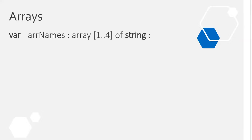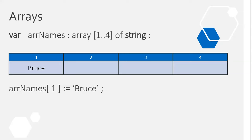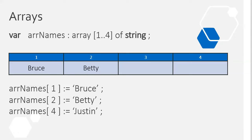Let's take an array of strings from 1 to 4. To put a value into the array, you take the name of the array followed by square brackets with the position you want to change, then use the assignment symbol. For example, 'arrayNames[1] := "Bruce"' puts Bruce into position 1. Similarly, 'arrayNames[2] := "Betty"' and 'arrayNames[4] := "Justin"'. You refer to the name of the array, square brackets, and the index of the value you're changing.